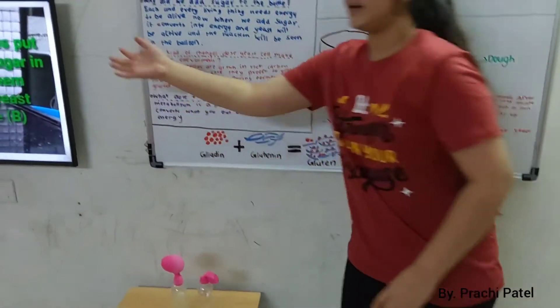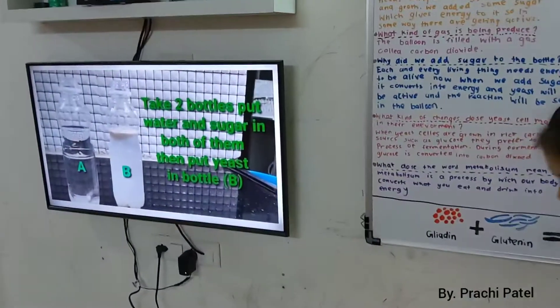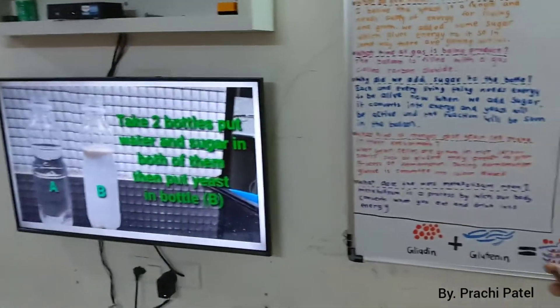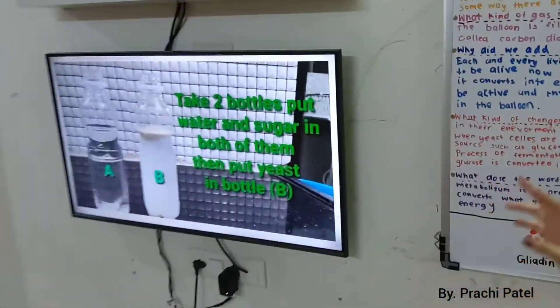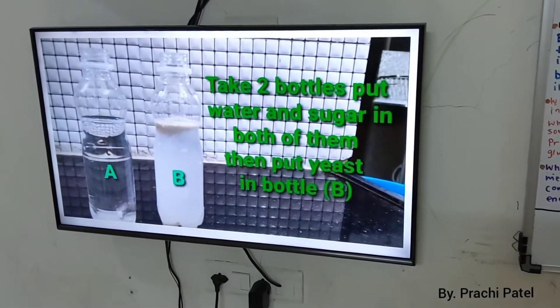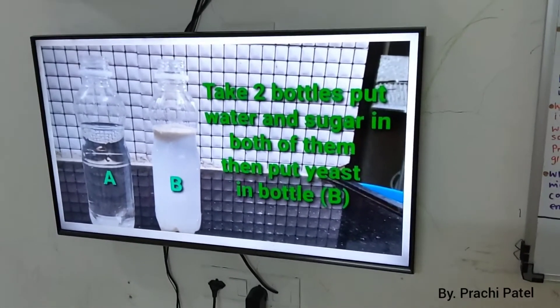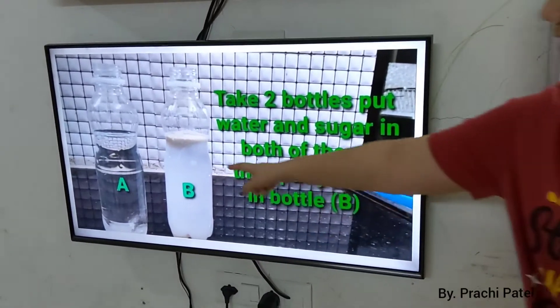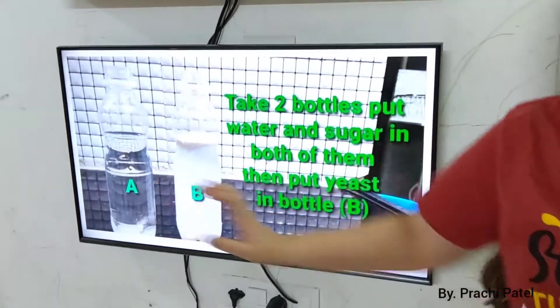So we are going to see what we took. We take two bottles, put water and sugar in both of them and put yeast in bottle B. You can see that bottle B contains the yeast, not bottle A.